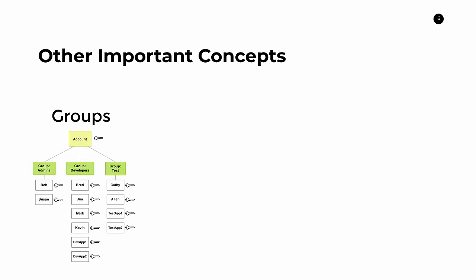Now I want to talk about some other important concepts. The first one is called groups. Groups are usually relevant for account owners or organization owners managing an AWS account. What groups allow you to do is bucketize your users into themes — for example, groups for admins, developers, and test. These groups allow you to assign a default policy document so that anyone with membership in a particular group automatically inherits the policies associated with that group. It's a great way to standardize the process of assigning permissions to users.